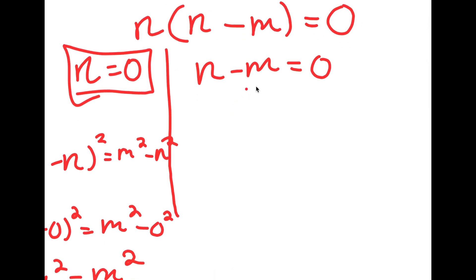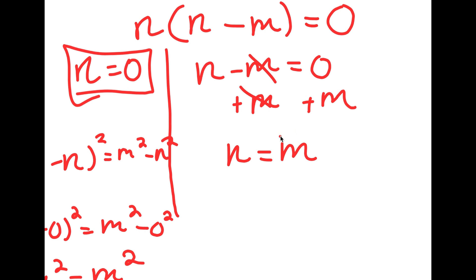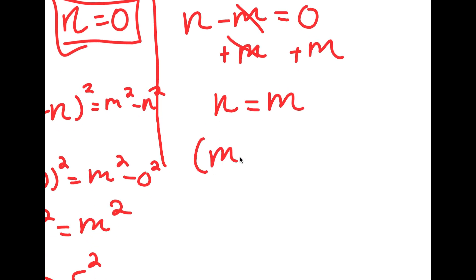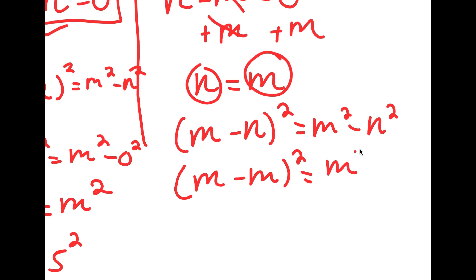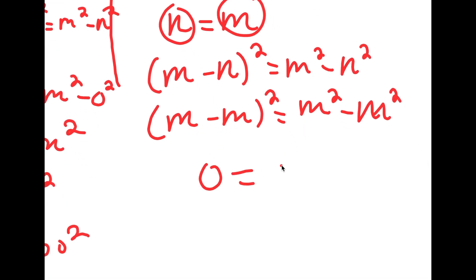For the case n minus m equals 0, if I add m on both sides, I get n is equal to m. If I put this back into the original equation, I have m minus n squared is equal to m squared minus n squared, and I'm going to rewrite n as m because they're both equal to each other. So now I have m minus m squared is equal to m squared minus m squared. m minus m is 0, so I have 0 is equal to 0, meaning both sides are equal to 0.